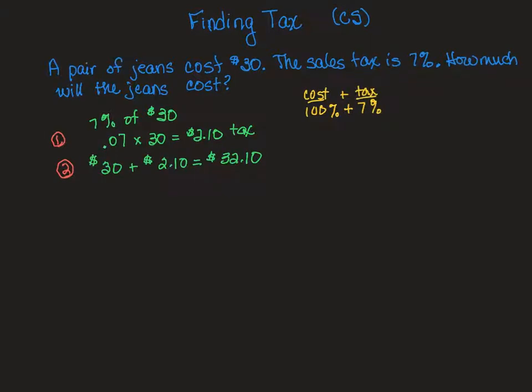So when I multiply, instead of multiplying separately and then adding, I could put them together and I could say that I need that $30 pair of jeans, times 107%. Okay. So that would be the cost plus the tax.